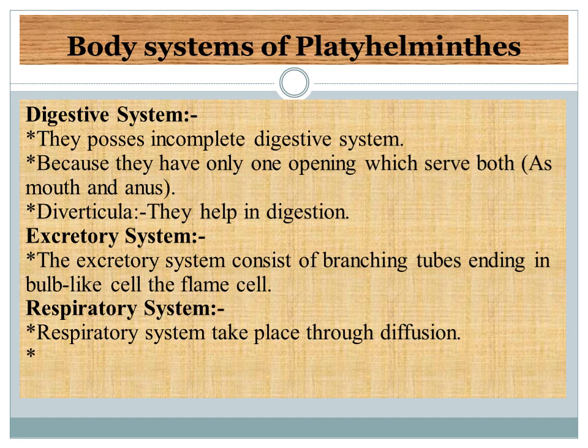Body systems of Platyhelminthes — Digestive system: they possess an incomplete digestive system because they have only one opening which serves as both mouth and anus. They have diverticula which help in digestion. These are the intestinal branches of Platyhelminthes, like in Planaria.